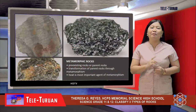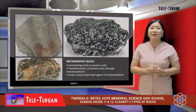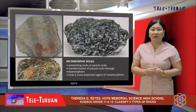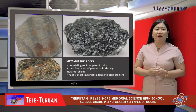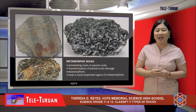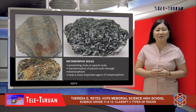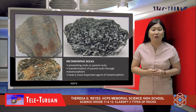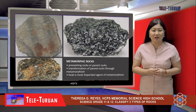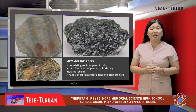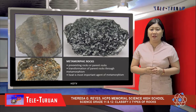The third type of rock is metamorphic. Metamorphic rocks came from pre-existing rocks called parent rocks. The process of transformation of parent rocks is called metamorphism, and the most important agent of metamorphism is heat.